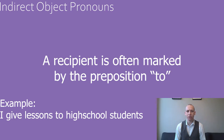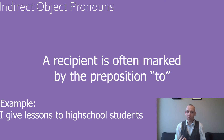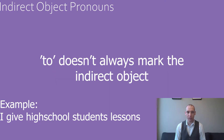In this example, the verb give is ditransitive. You can see there are three phrases that relate to the verb: the subject I, the direct object lessons, and the indirect object high school students. In English you can see the preposition to helps to identify the indirect object, but it isn't always present. Keeping in mind the idea of a recipient is a useful way to identify the indirect object of the verb.